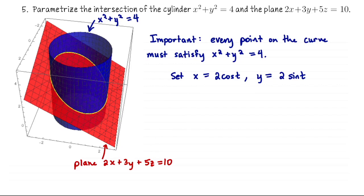That's what the cylinder motivates us to do, but now let's turn our attention to the plane. The statement I made about how every point on this curve must satisfy the equation for the cylinder is also true about the plane. So every point on this curve of intersection also has to satisfy that 2x plus 3y plus 5z equals 10.